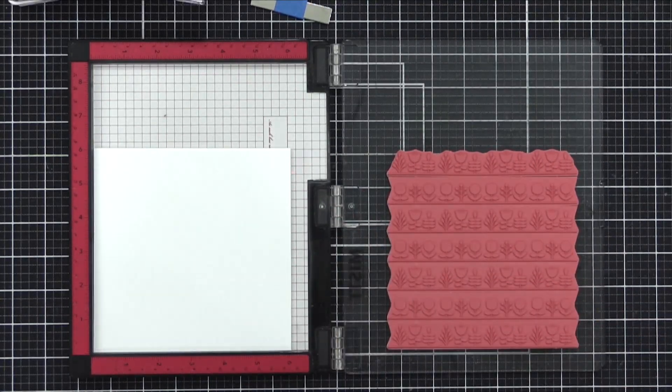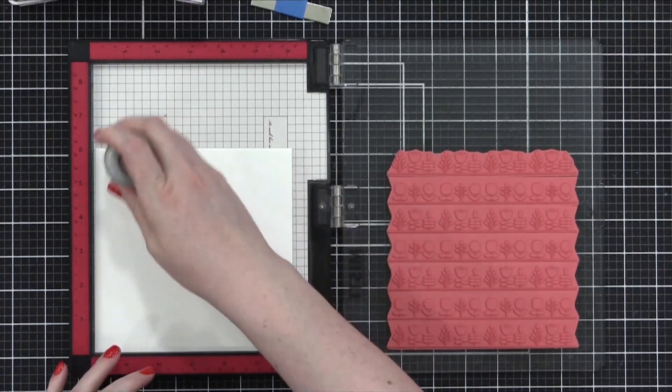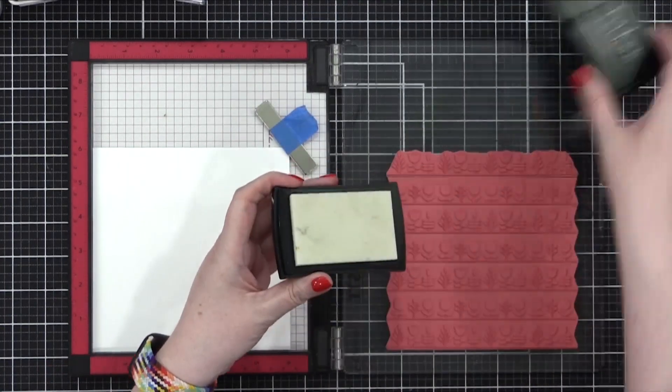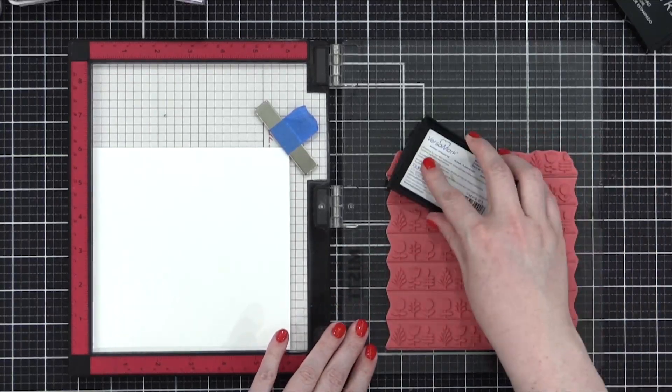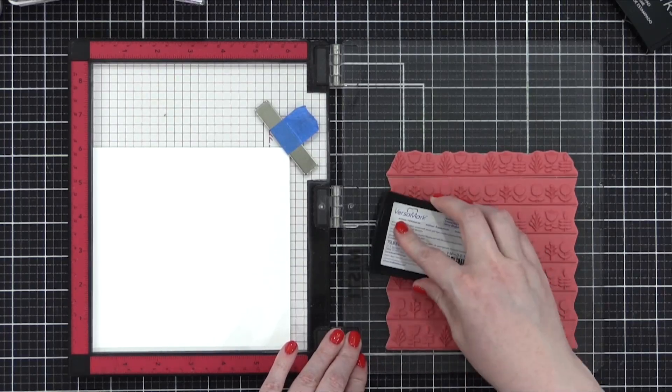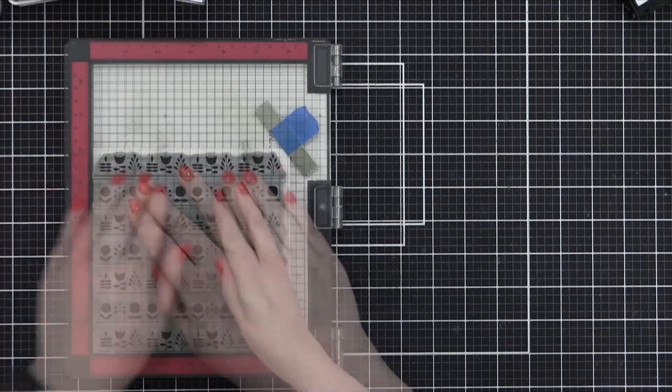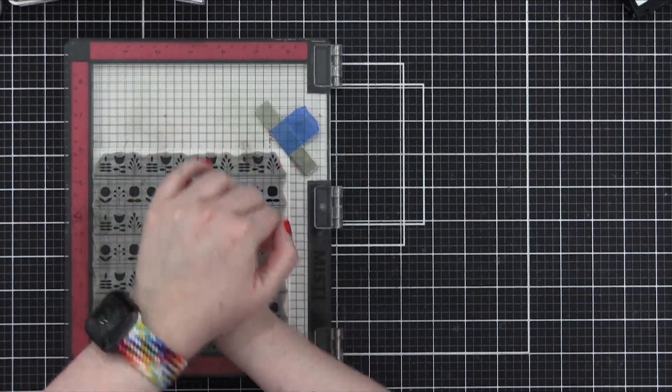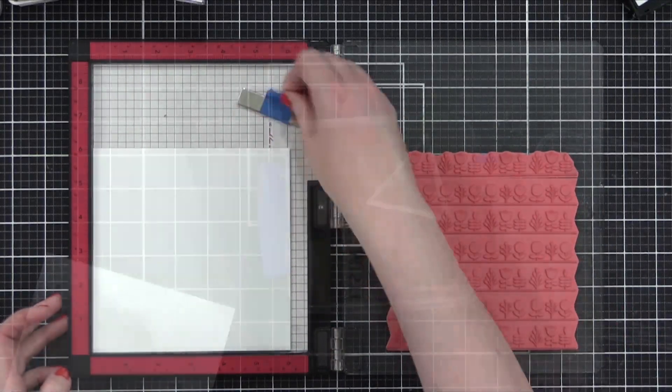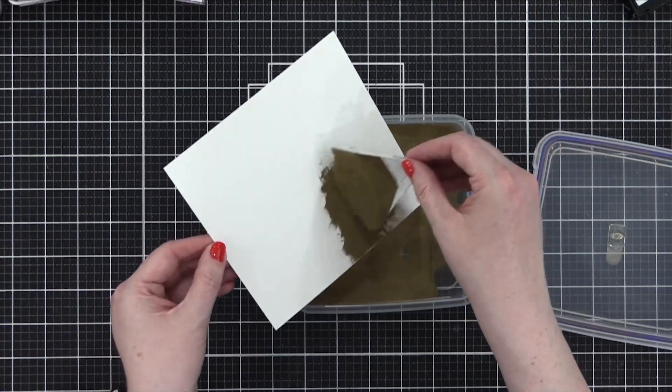I'm going to be stamping the entire background stamp in Versamark ink and doing some heat embossing. I'll cut all the strips apart and then do lots of ink blending. Having the separated strips of the rows is going to give me a chance to have really fun blending, lots of different colors and switching of colors. The embossing powder I'm using today is the color Gilded from Brutus Monroe.